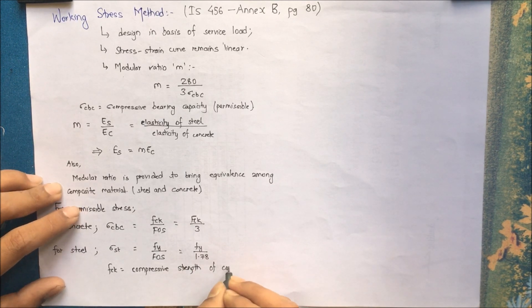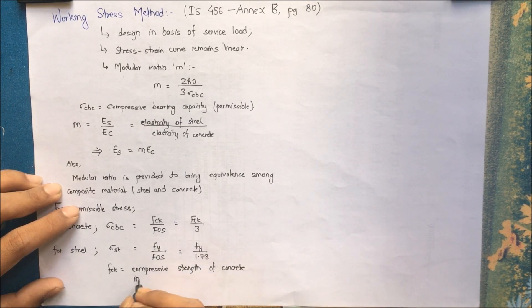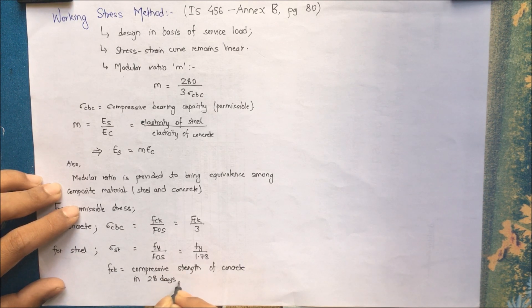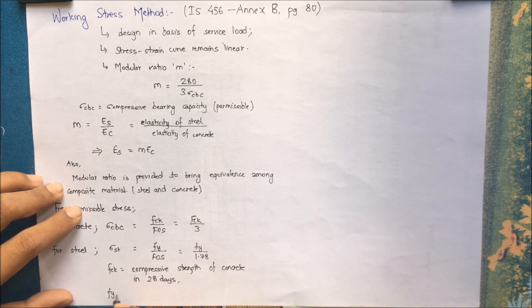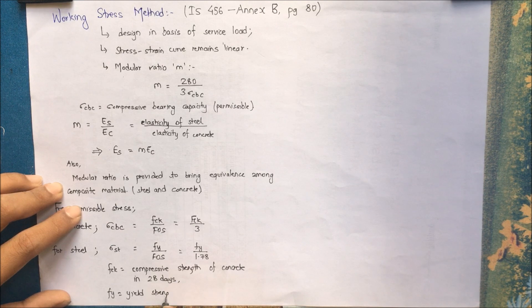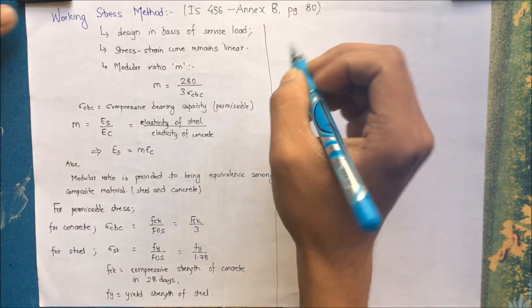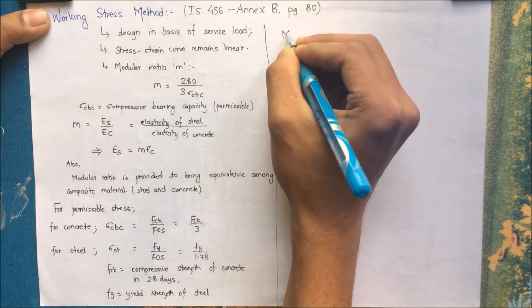FCK is the compressive strength of concrete at 28 days. As we know, concrete gains most of its strength within 28 days after construction.